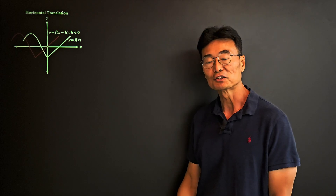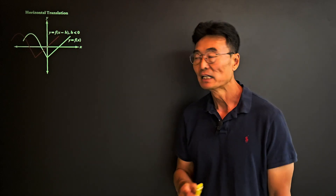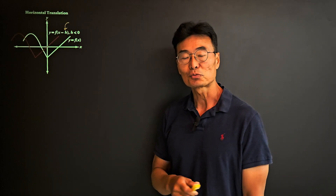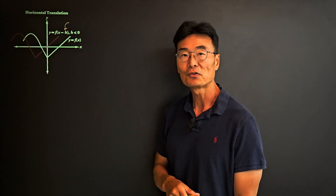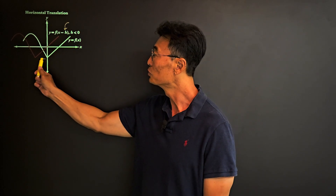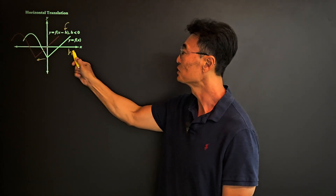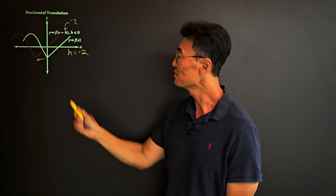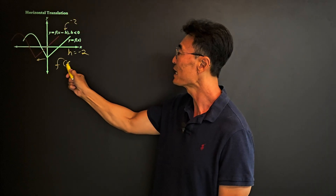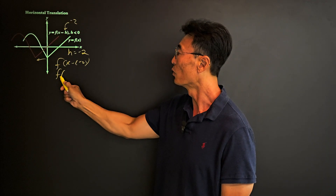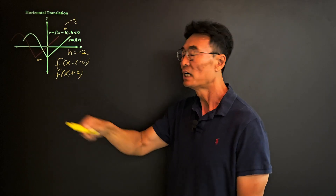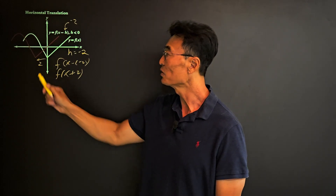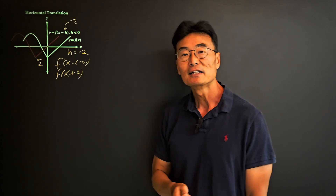For horizontal translation — moving the graph left and right — notice the constant h is inside the parentheses right next to x. If h is less than zero, the graph will go to the left. For example, if h = -2, it becomes f(x - (-2)) or f(x + 2), so when we have x + 2 the graph goes to the left two units.